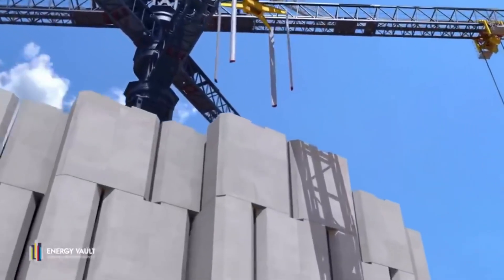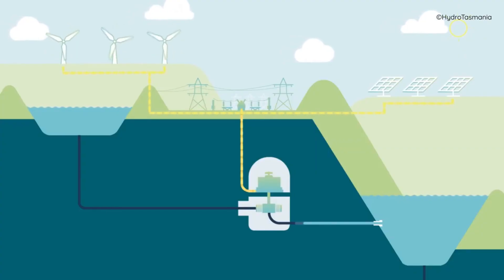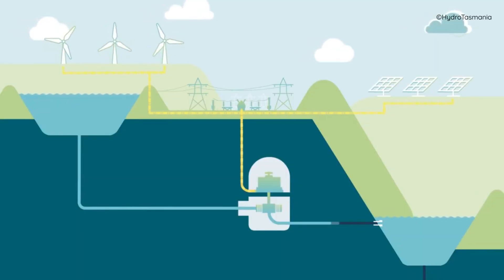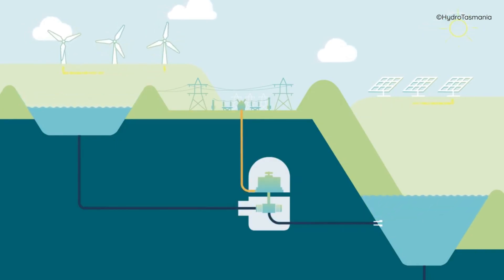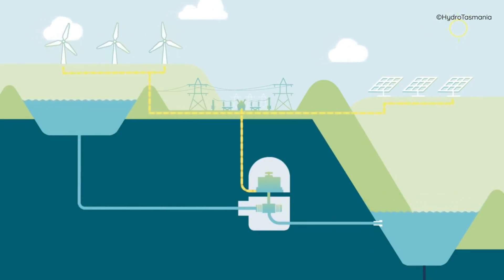The concept of a gravity battery system is not new. In fact, it is similar to the oldest form of energy storage, pumped hydro. Pumped hydro uses water as the storage medium and pumps it to higher elevations to store energy and releases it through water turbines to generate electricity. Pumped hydro accounts for more than 90% of global high-capacity energy storage.